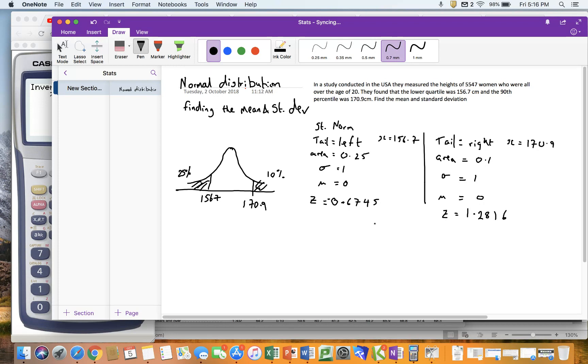Notice how this one's negative and this one's positive, and that makes sense. This value's on the left of my mean, and my mean is 0, so it's going to be negative. And this value's to the right of my mean, and my mean is 0, so that's going to be positive.